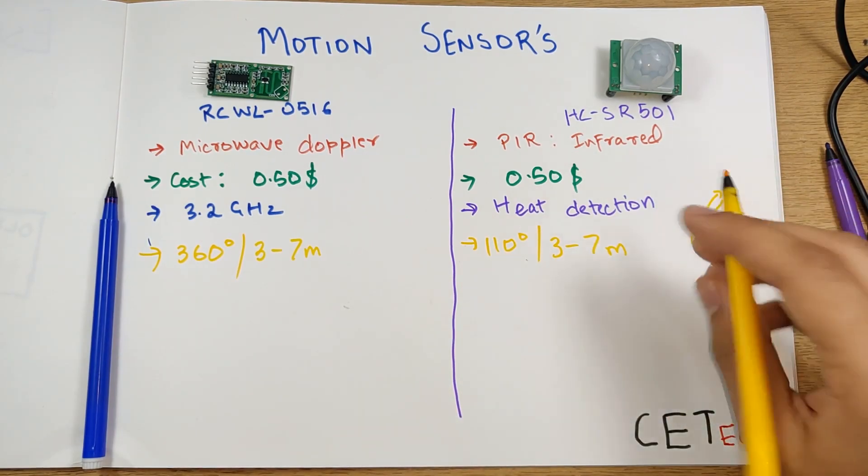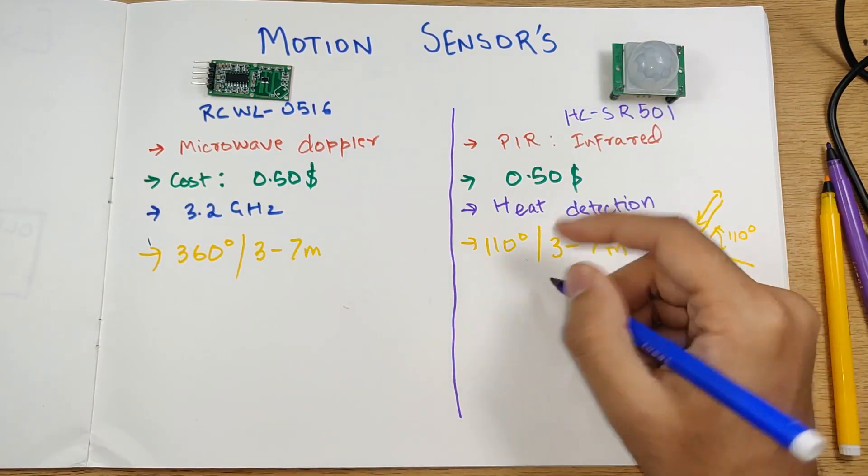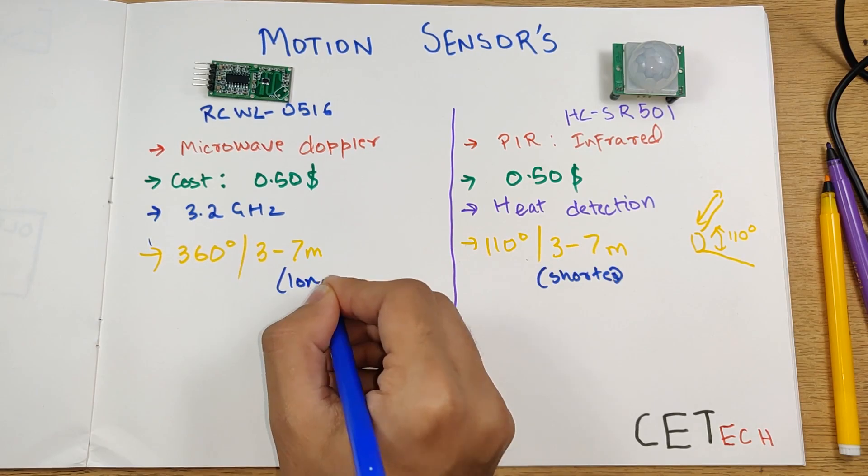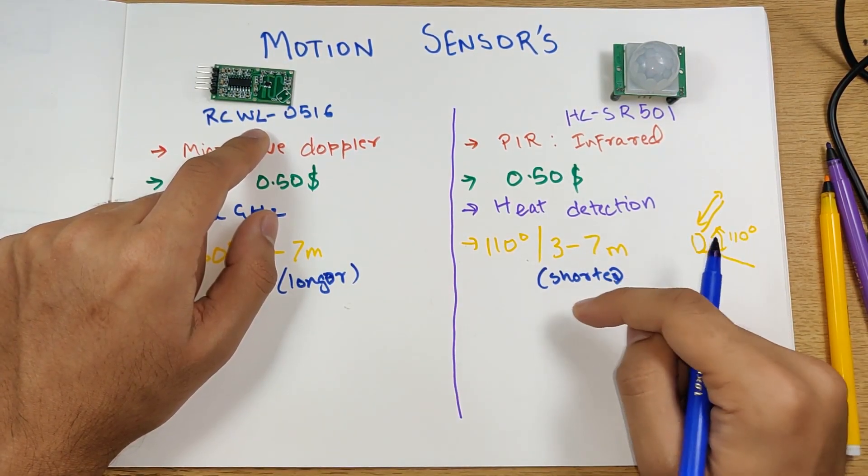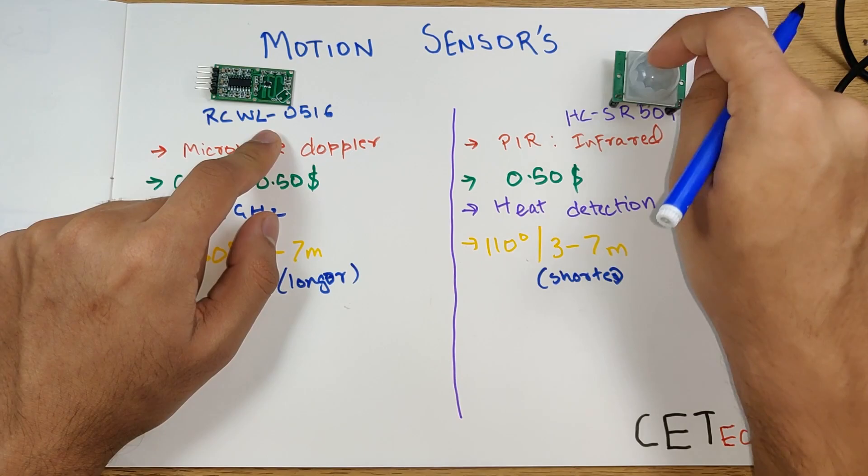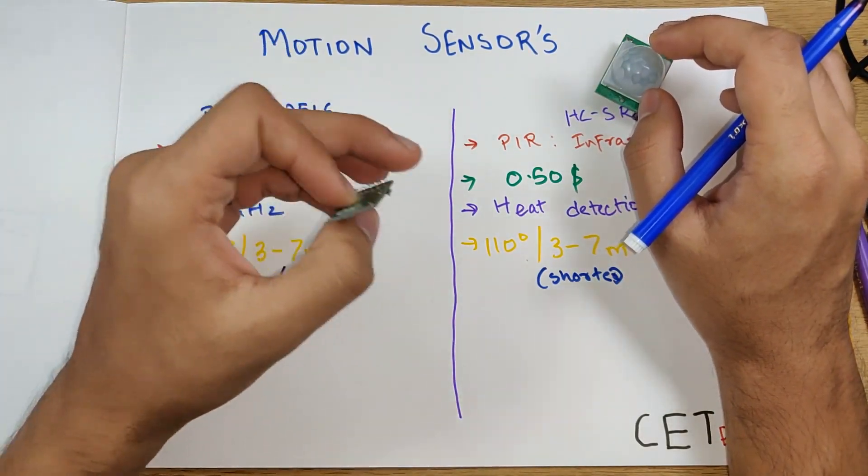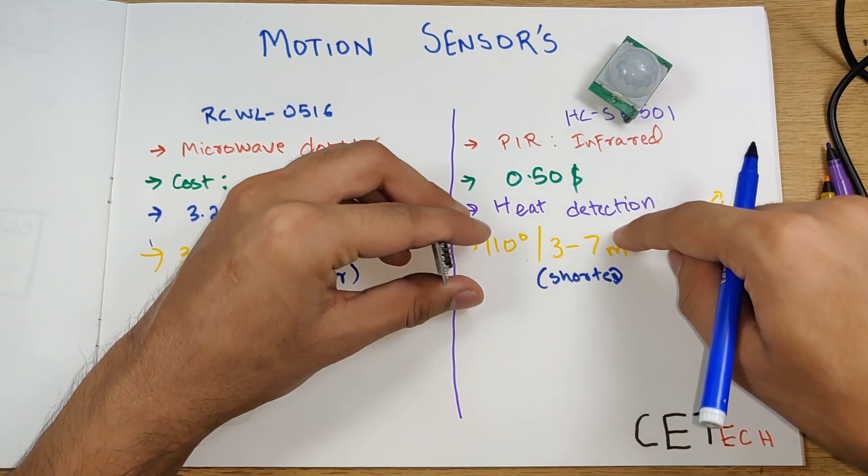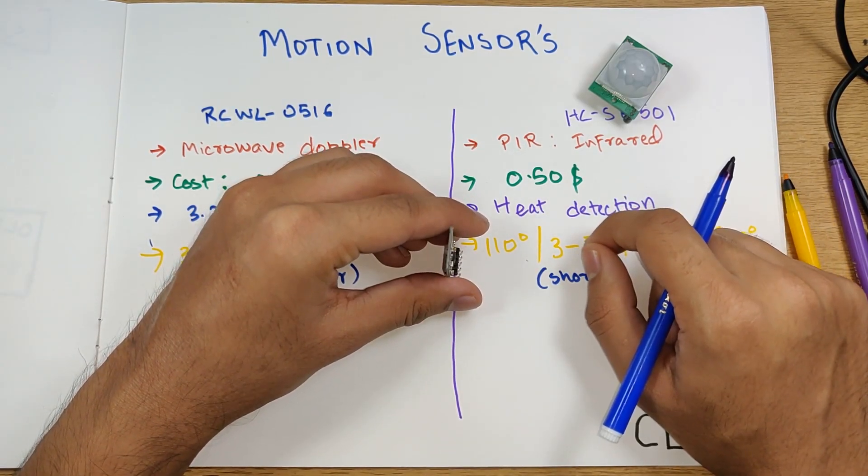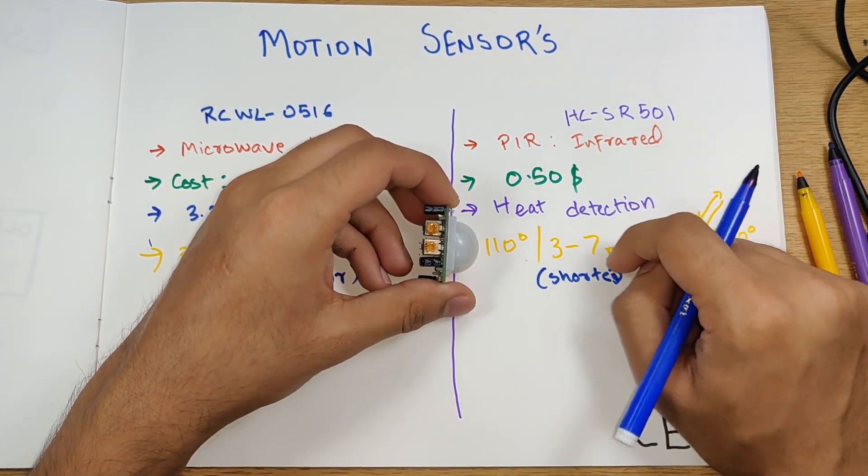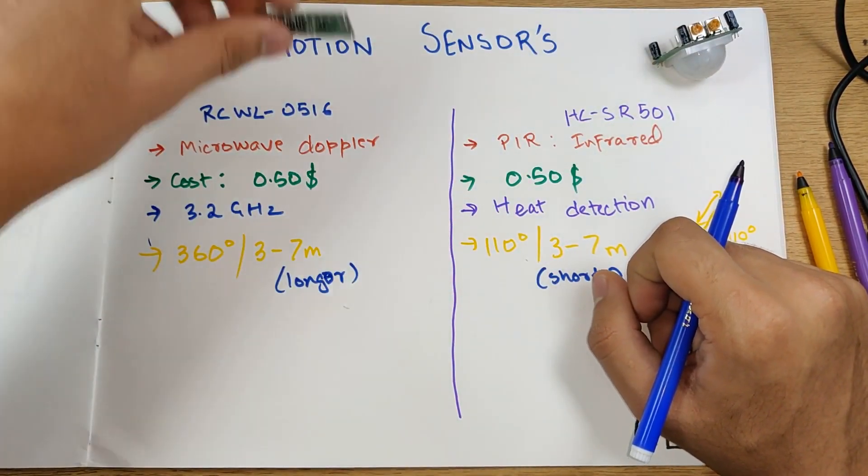I will personally, according to my tests, suggest that you use this for a shorter range and this for a longer detection range. This is not very good in shorter ranges like one or two meters, but this can detect motion in one or two meters as well. If I use this here and I place my finger here, it might not detect the motion of my finger over here, but this does detect the motion. This is not very good for very close ranges but this does the job.